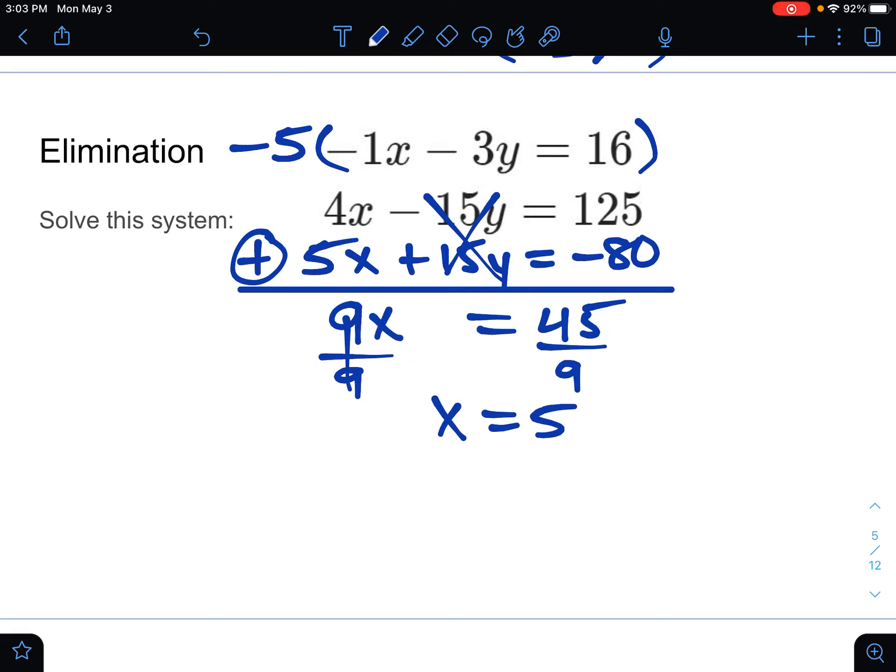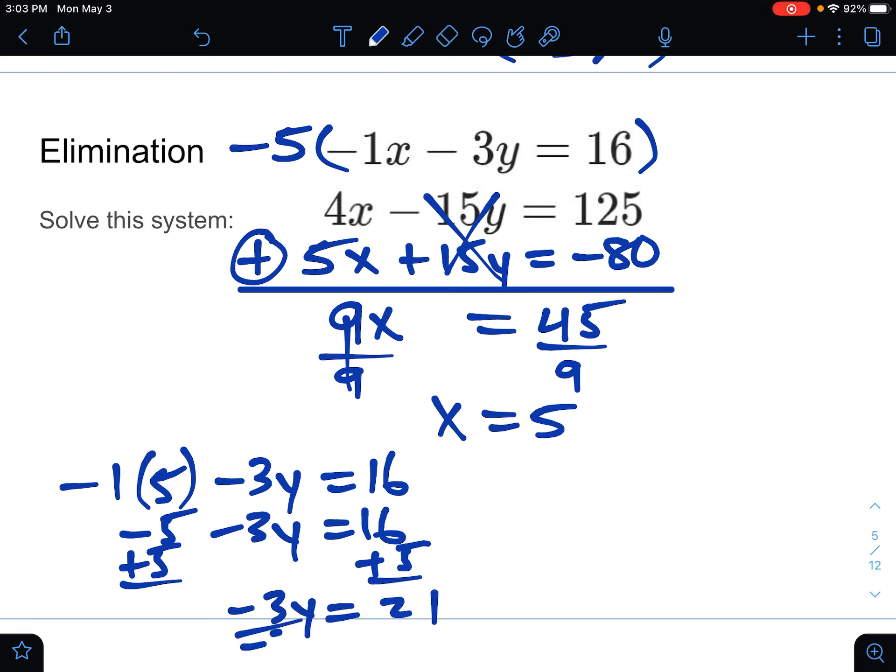Then again, plug back into either equation. I'm going to go back to the original. So negative 1 times 5 minus 3y equals 16. So negative 5 minus 3y equals 16. Adding the 5 to both sides gets us negative 3y equals 21. Divide that by negative 3 and you get the y coordinate, which is negative 7. So our answer is 5, negative 7, the x and y coordinate there.